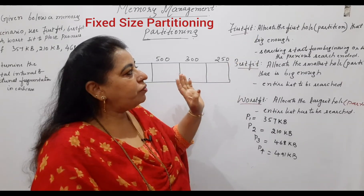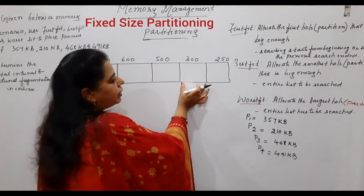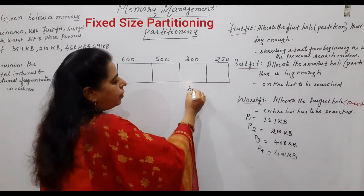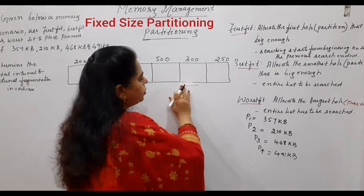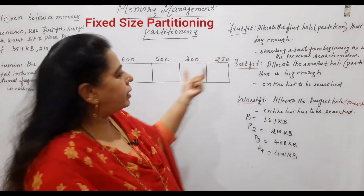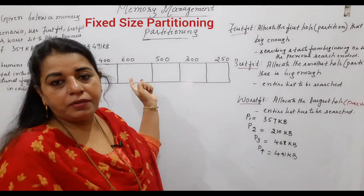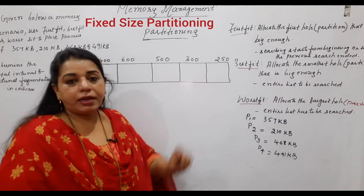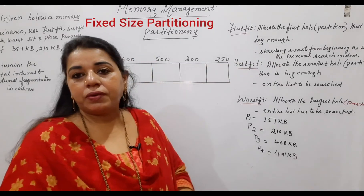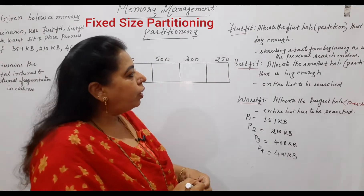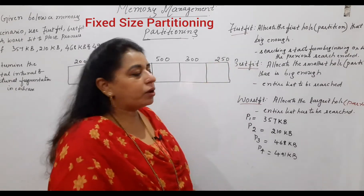First fit says: allocate the first hole or partition. Galvin uses the word 'hole' here, while other books use 'partition' — both mean the same. You have to select the very first partition that is big enough to hold the process, starting the search from the beginning or where the previous search ended. Once you carry out a numerical it will become more clear.